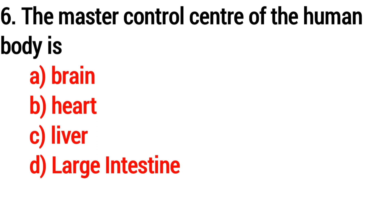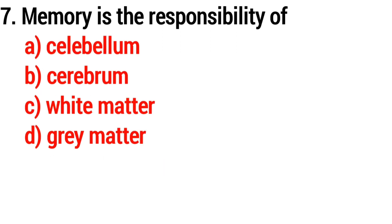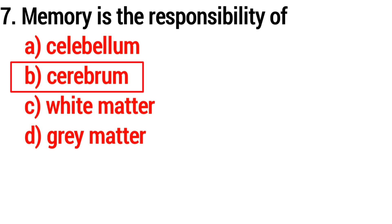Question number six: the master control center of the human body? Answer option A — brain. Question number seven: memory is the responsibility of? Answer option B — cerebrum.